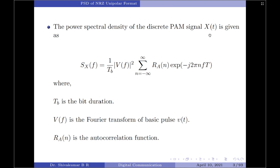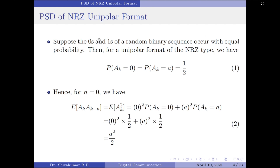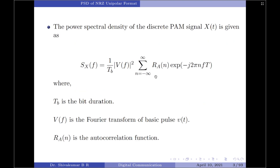To start the derivation, suppose the zeros and ones of a random binary sequence occur with equal probability — we have considered a binary source. For an NRZ unipolar format, the probability of symbol amplitude ak = 0 equals the probability of symbol amplitude ak = A, both equal to 1/2, where this represents symbol 0 and this represents symbol 1.